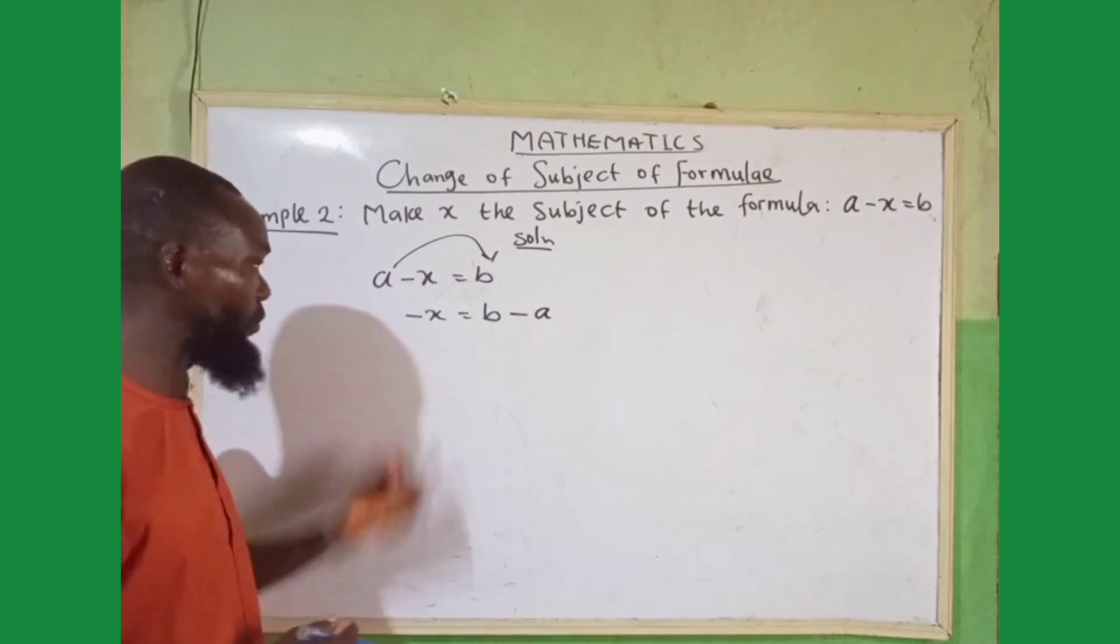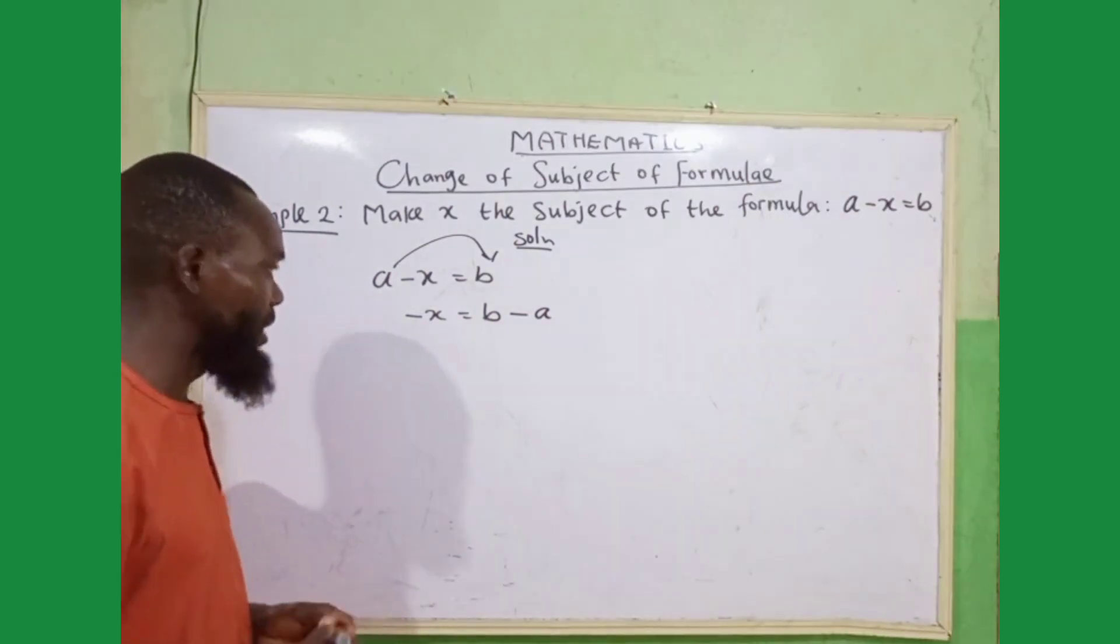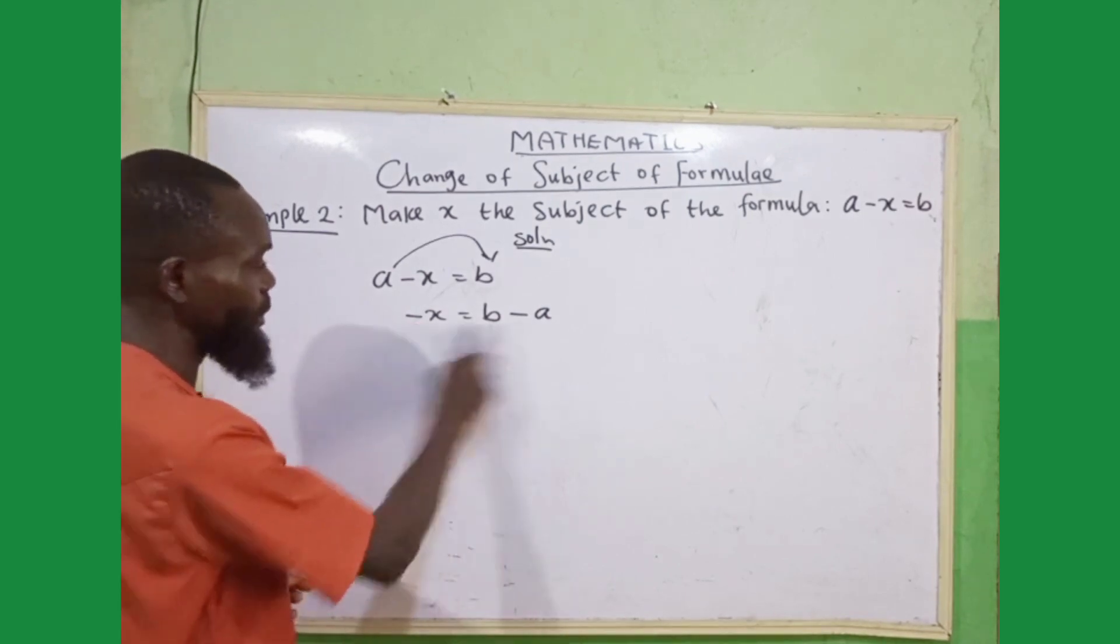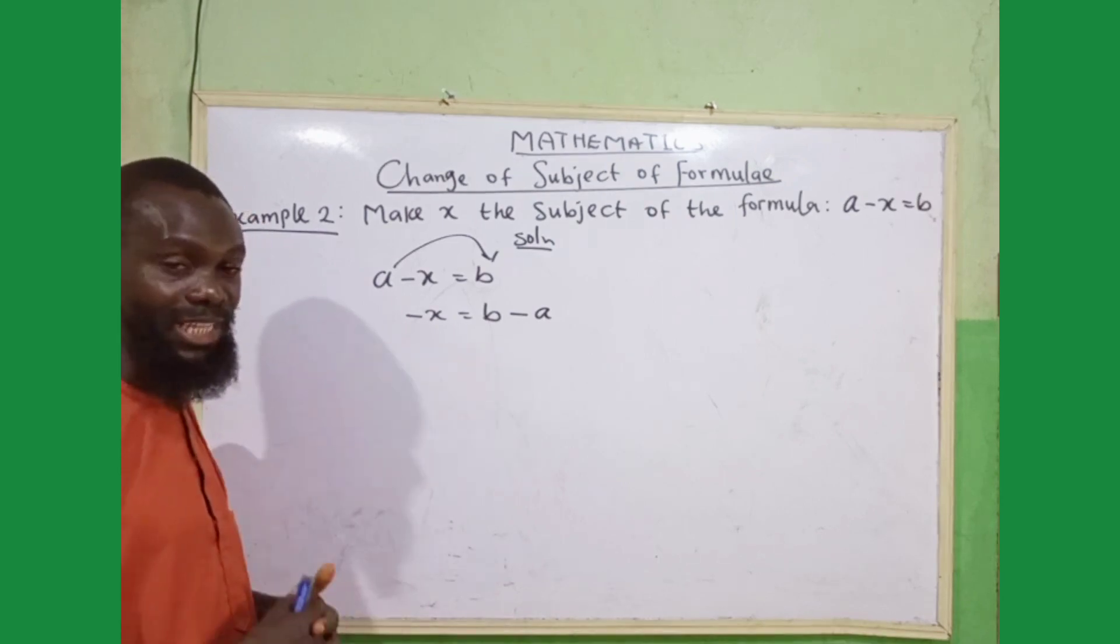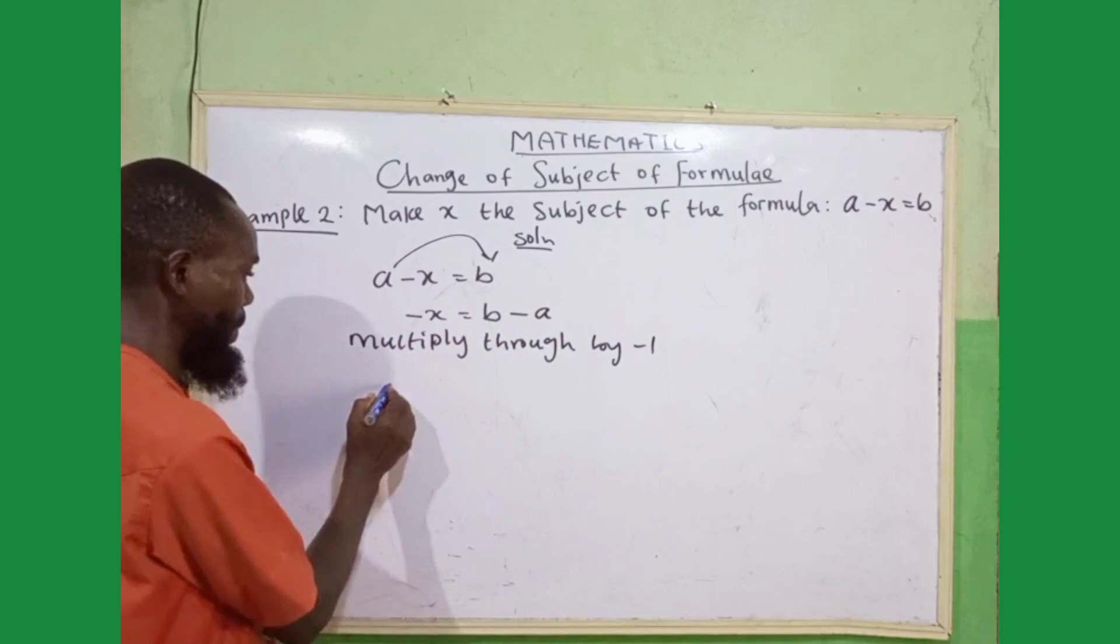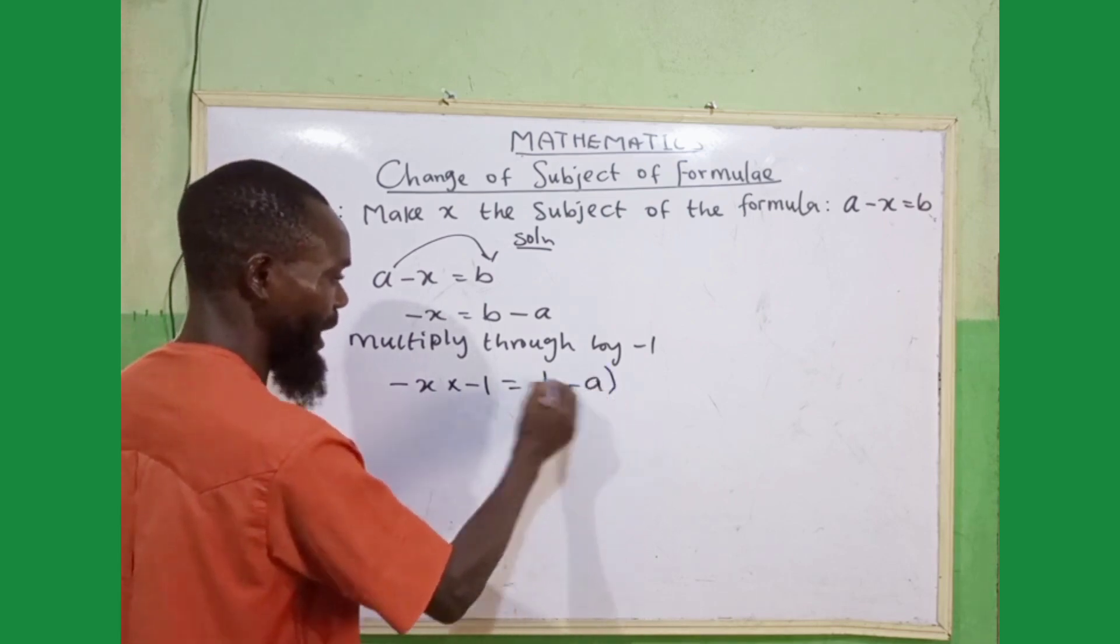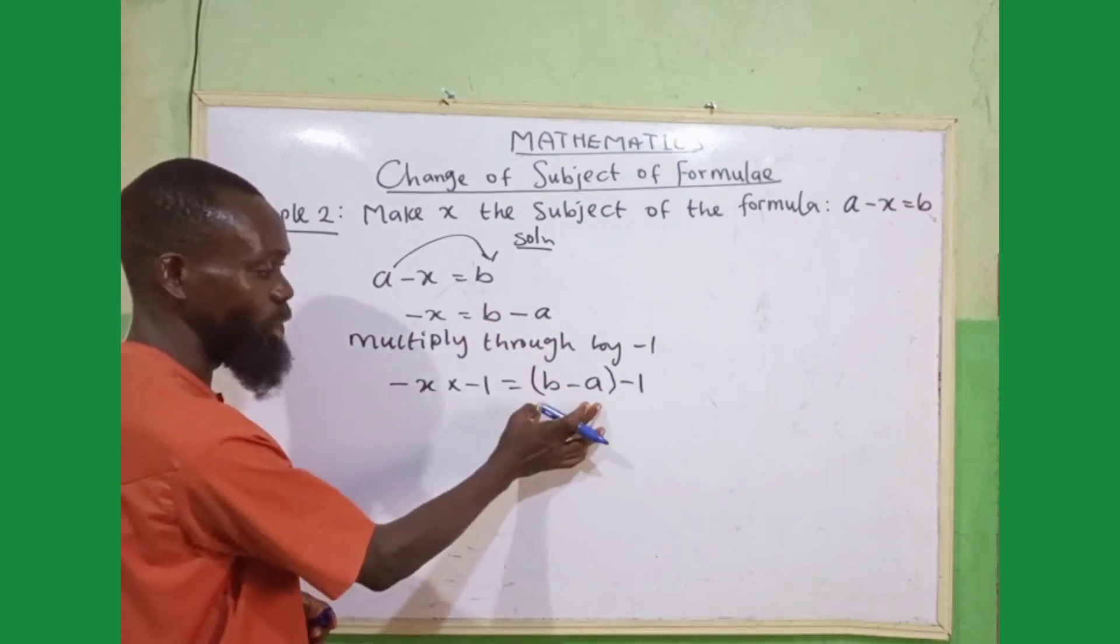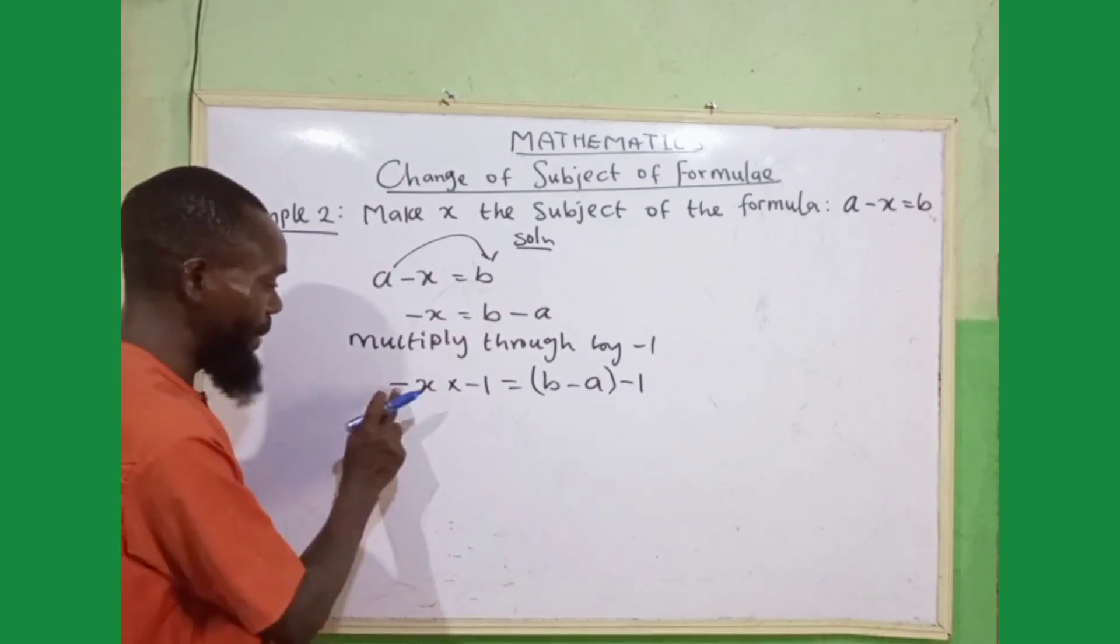My dear students, I am to look for value of x and not the value of minus x. Then, I have to find a way of removing this negative. By either multiplying both sides by negative one, to change this one to positive. Or divide both sides by negative one. Now, let me multiply through by minus one. -x × -1 = (b - a) × -1. So since I am having two different values, I have to use brackets for my multiplication. But if it is just one value like -x, I can just use ordinary multiplication.